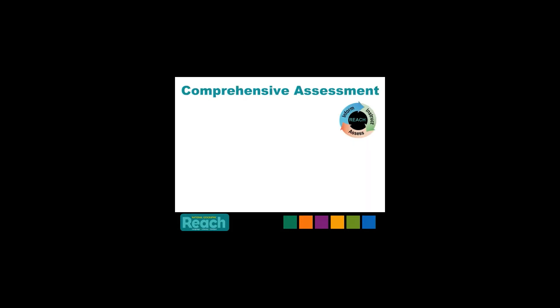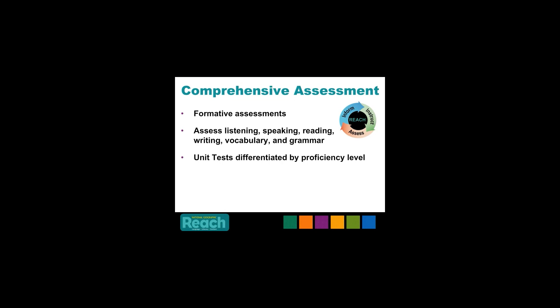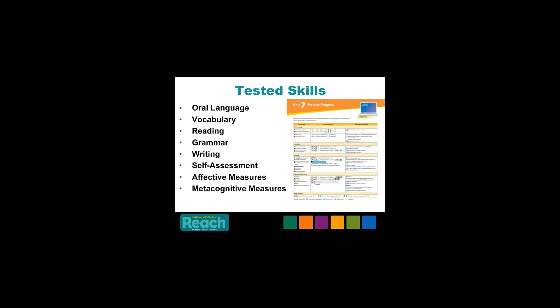Assessment is critical to instruction and academic success. Reach provides many opportunities to check for understanding, including formative assessments in all areas — listening, speaking, reading, writing, vocabulary, and grammar — unit tests that differentiate by proficiency level, and re-teaching resources to help close the gaps before your state language, reading, and writing tests. Make sure you read Jennifer Turner's author monograph Get to Know Your Learners and Know What They Know, which addresses assessment in Reach. If you have a Teacher's Edition, go to the last page of any unit to see the tested skills, assessment tool resources, and opportunities to review and re-teach.